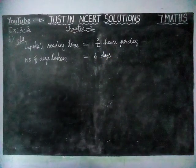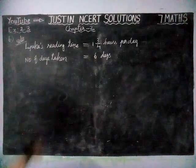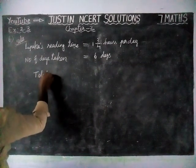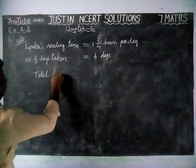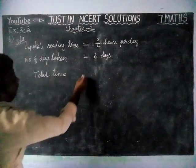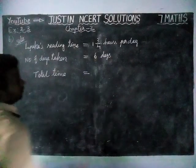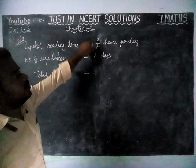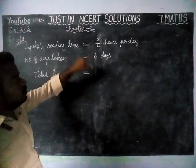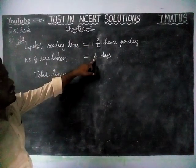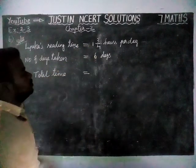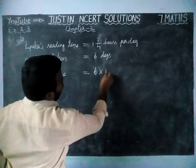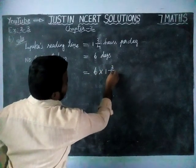Now, we have to find the total time. Total time is equal to per day she is taking 1¾ hours for reading, and totally she has completed in 6 days. So, 6 into 1¾.